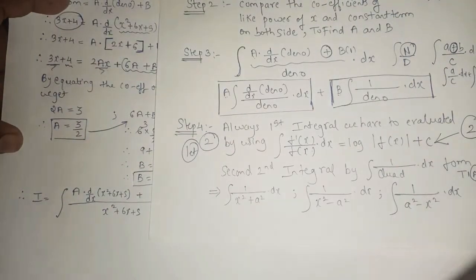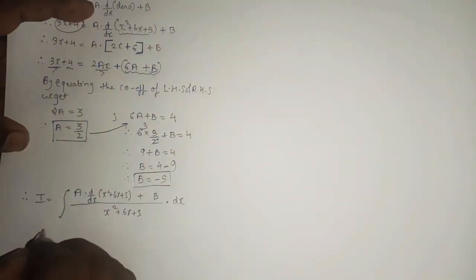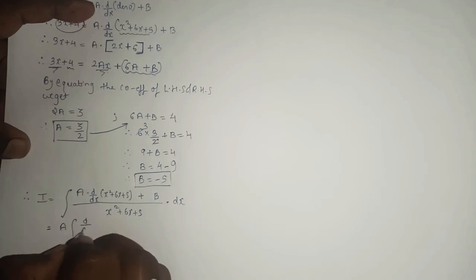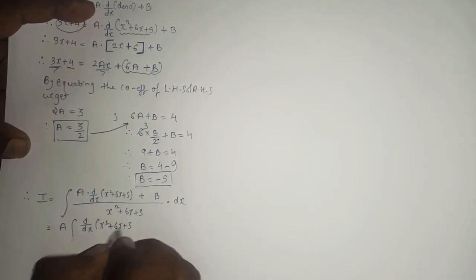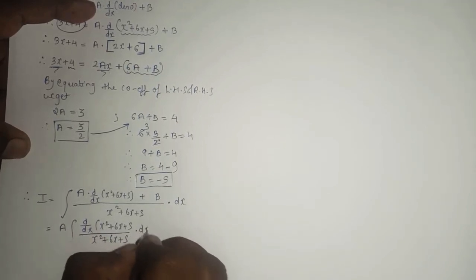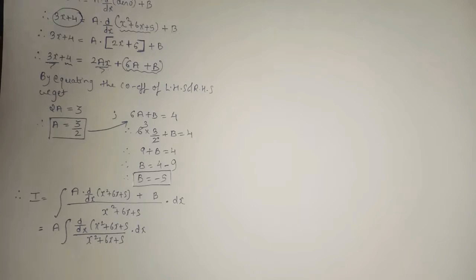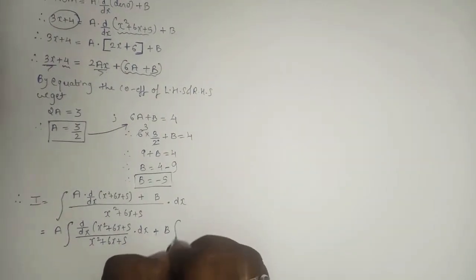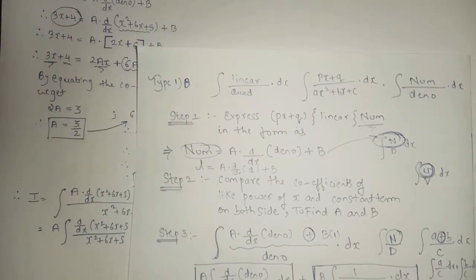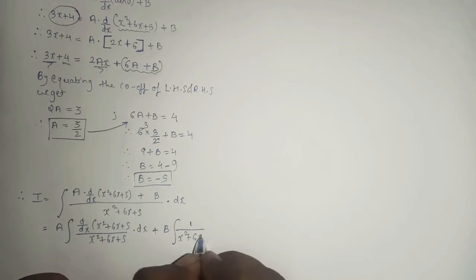We separate the denominator. Keeping A outside the integral, we get: A times integral of d/dx(x squared plus 6x plus 5) upon (x squared plus 6x plus 5) dx, plus B times integral of 1 upon x squared plus 6x plus 5 dx.